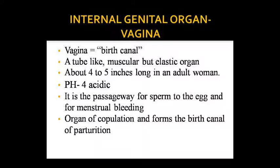The first internal genital organ is the vagina. Where the external genitalia open, that is called the vagina. We also call it the birth canal because the fetus passes through it to come out into the external environment. It is a tube-like muscular elastic organ — it is elastic, so it dilates to allow the baby to pass through. It is approximately 4 to 5 inches long.